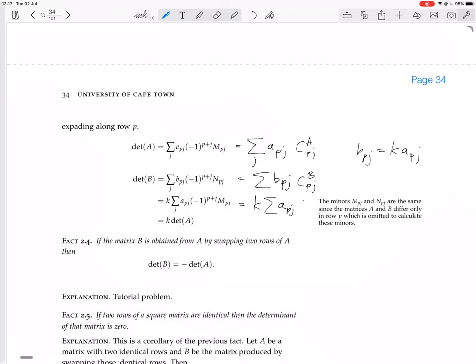And here we have A_Pj times the cofactors. But the cofactors, the matrices A and B are the same, apart from the Pth row. That was the only row we changed, multiply that by k.